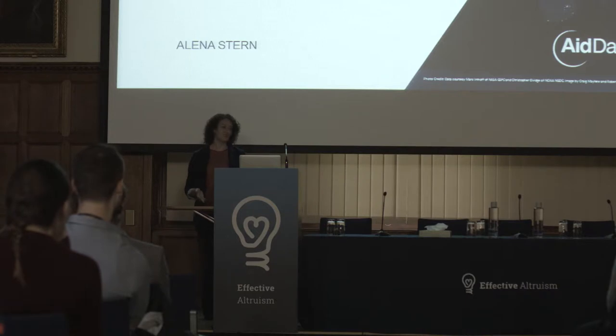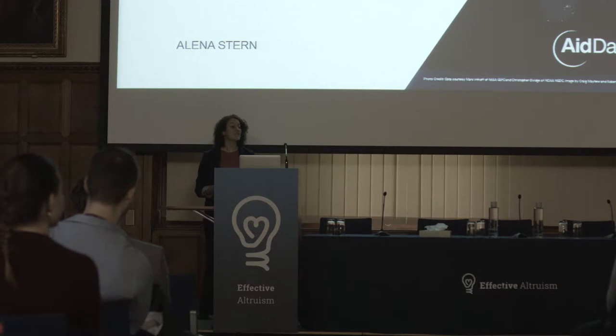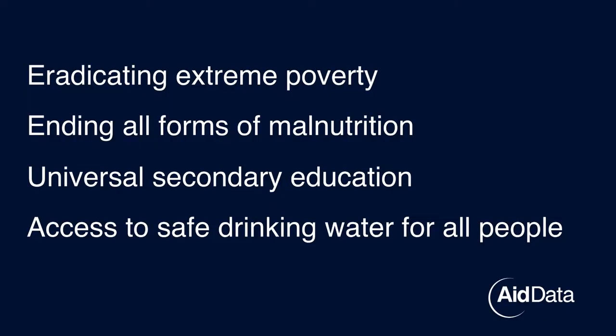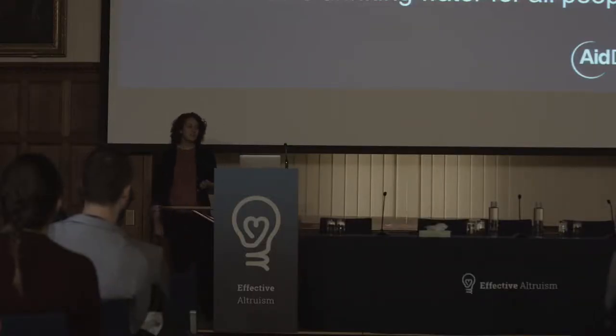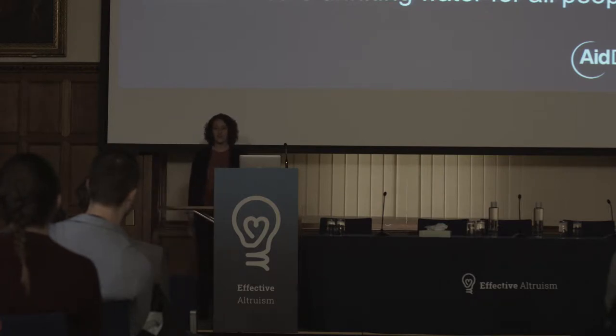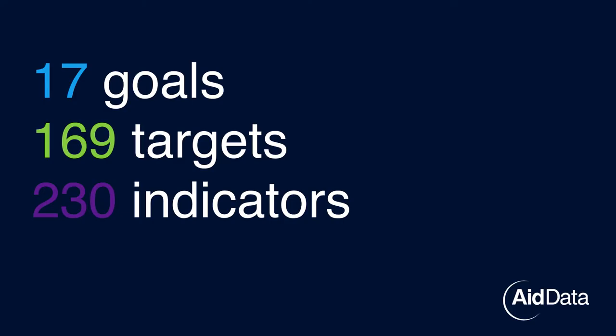First, some context. Last year the development community ratified the Sustainable Development Goals, a set of ambitious objectives for what the world can achieve by 2030. This includes eradicating extreme poverty, ending all forms of malnutrition, universal secondary education, and access to safe drinking water for all people. The Economist has estimated that achieving the SDGs will require 2 to 3 trillion dollars per year over 15 years.